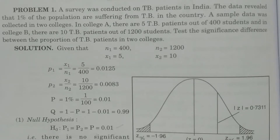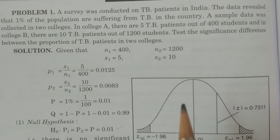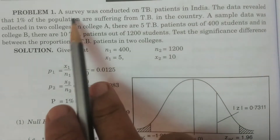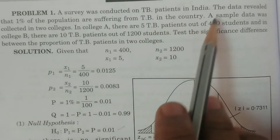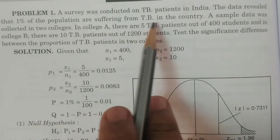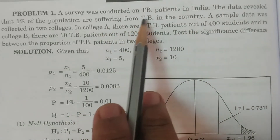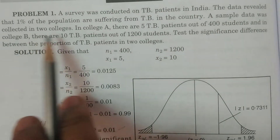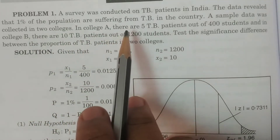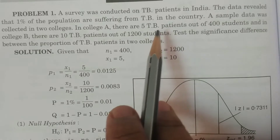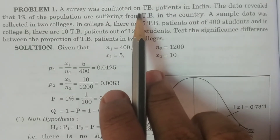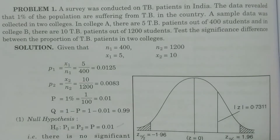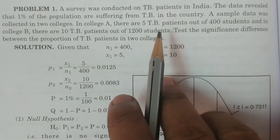A survey was conducted on TB patients in India. The data revealed that 1% of the population are suffering from TB in the country. This is sample data — it is capital P, a general statement that 1% of the population suffer from TB across the nation.